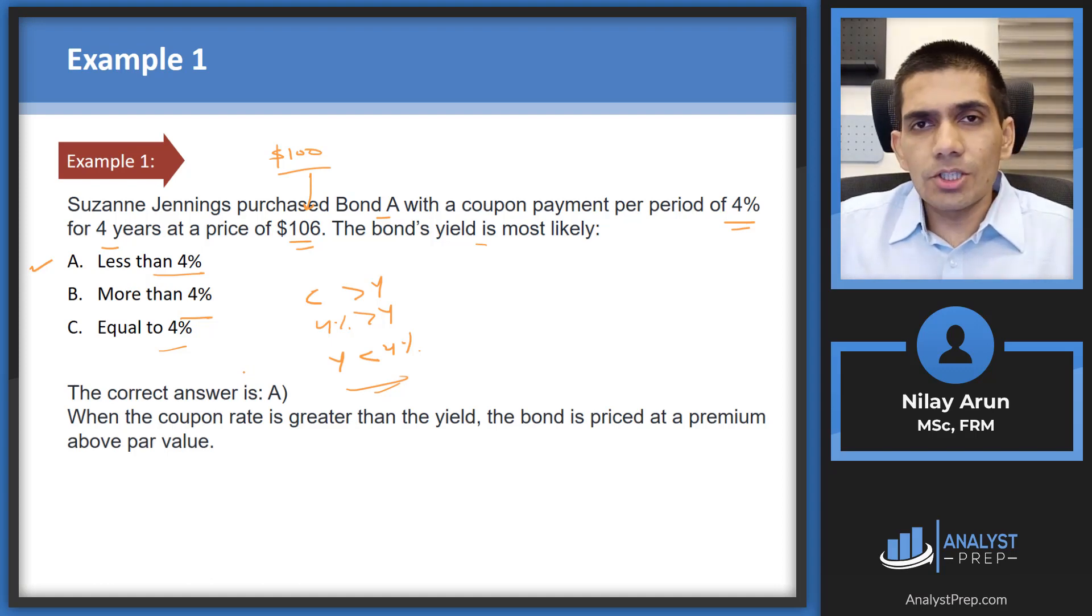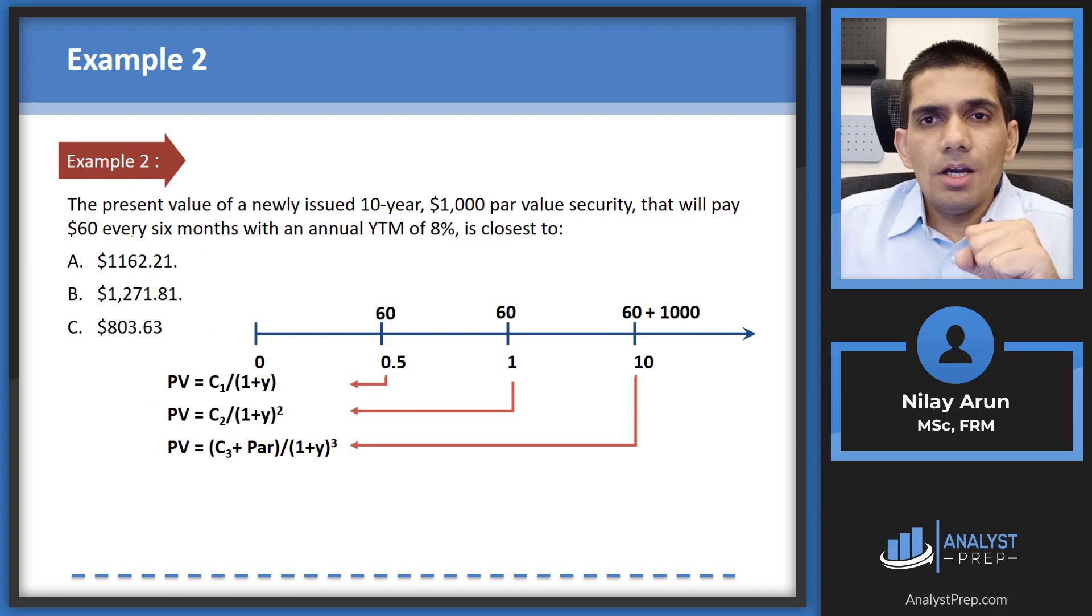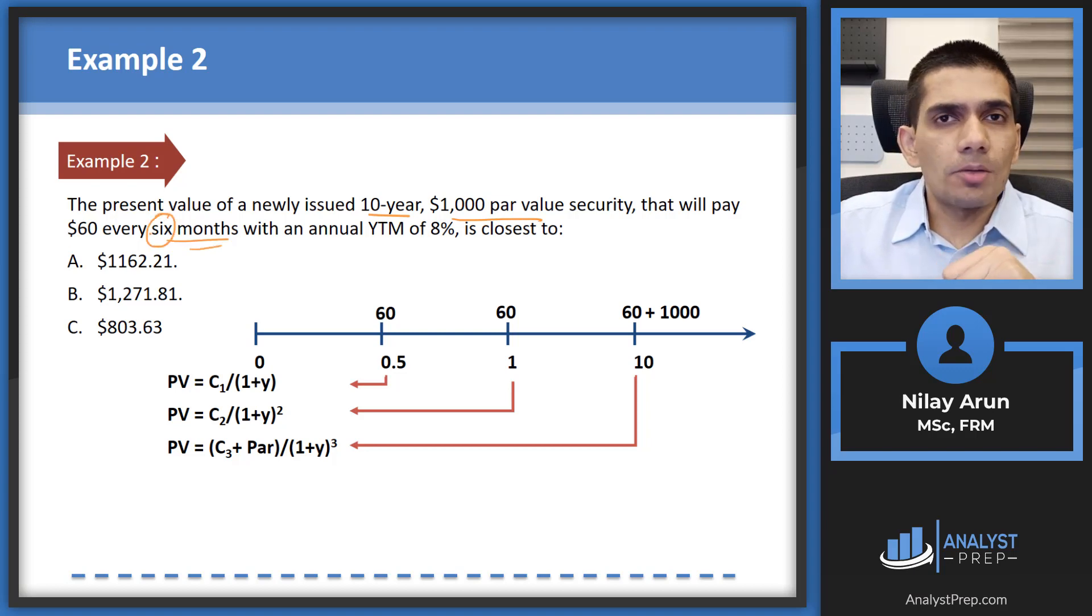And let's look at another question. The present value of a newly issued 10 year thousand dollar par value security that will pay every six months. So remember this is a very important part. Every six months. It's not an annual paid bond. It's paying you every six months. It's a semi-annually paid bond with an annual YTM of 8%. So we need to calculate what the value would be. So we need to calculate the present value. Now let's see what are the various numbers which you need to put in into your BA 2 plus calculator.